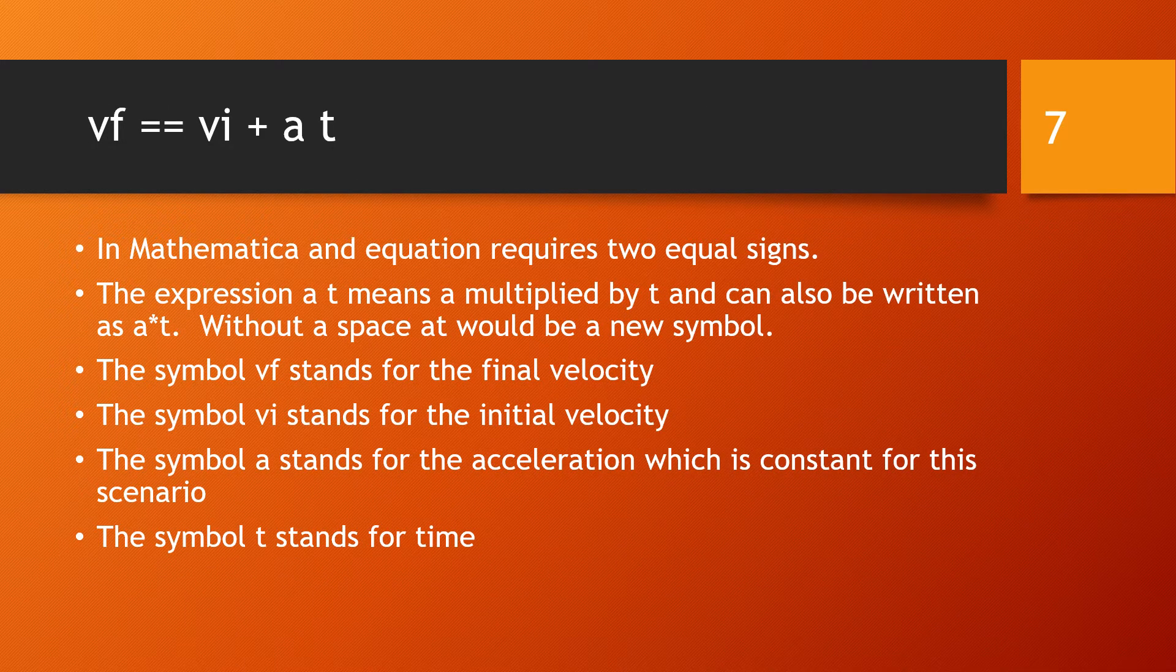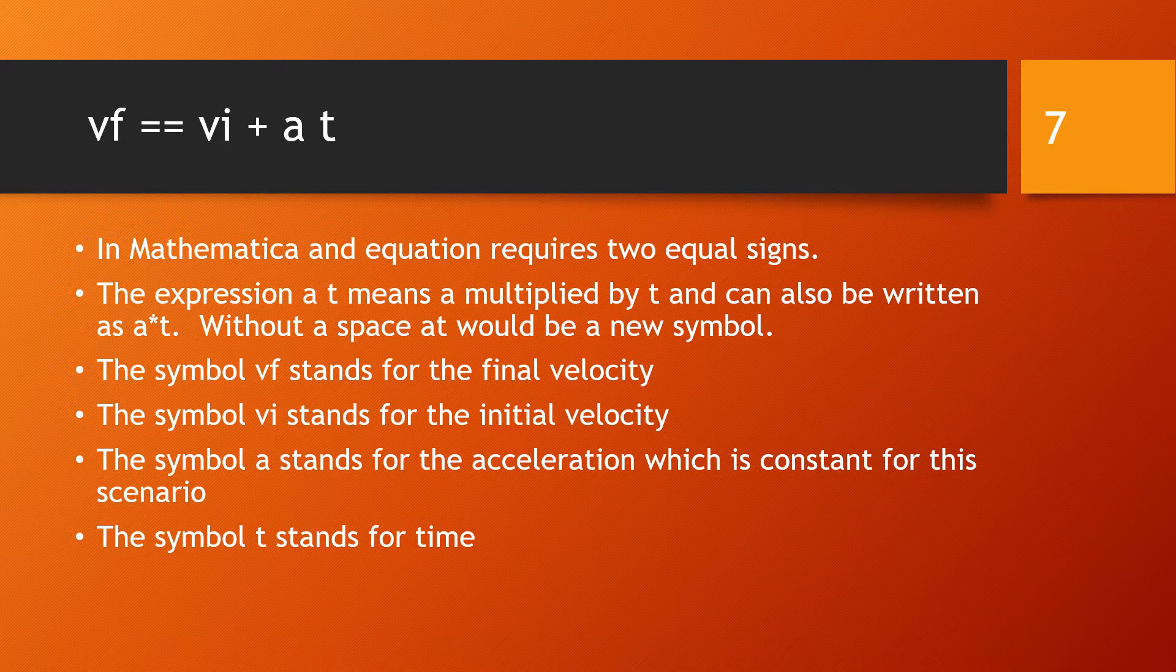So what we entered was vf == vi + a*t. In Mathematica, in Wolfram, the equals of an equation corresponds to two equal signs. The expression a*t means the variable a multiplied by the variable t, it can also be written as a asterisk t or a star t. If you didn't have the space, that would be some new symbol. The vf is a single variable standing for final velocity, vi is a single variable standing for the initial velocity, a is standing for the acceleration which is constant, and t is standing for time.